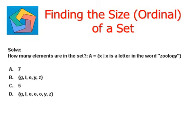How many elements are in the set A, where A is defined by the set of all x, x is a letter in the word zoology. Now let's list down all the elements of the set: Z, O, O, L, O, G, and Y.